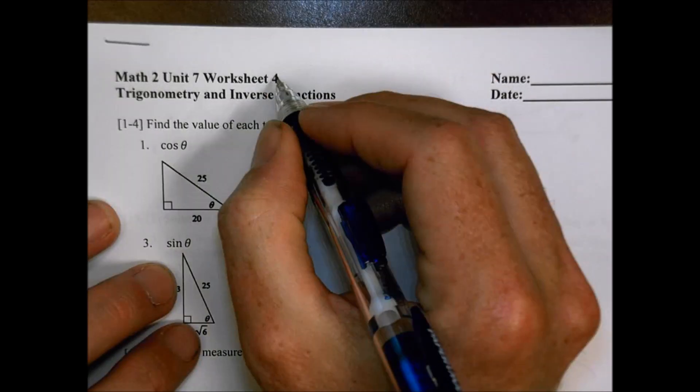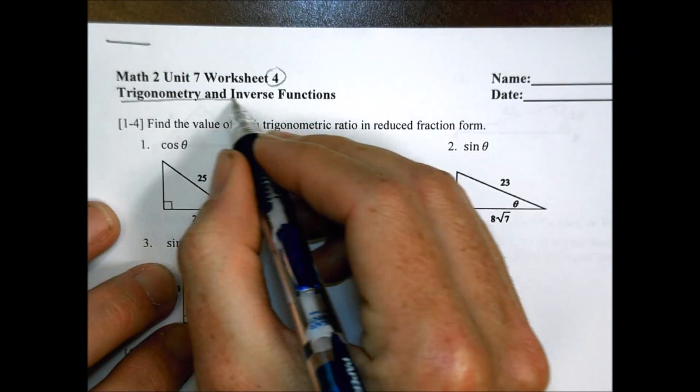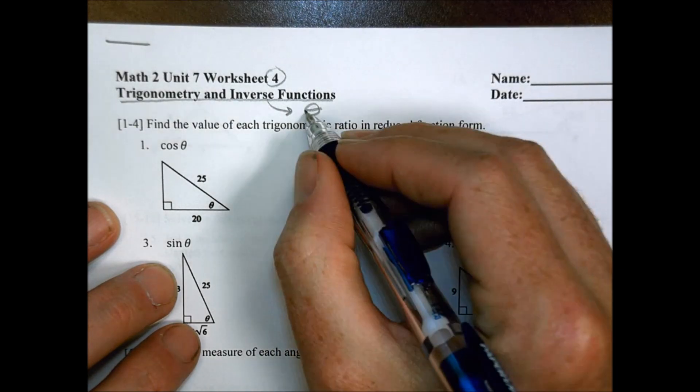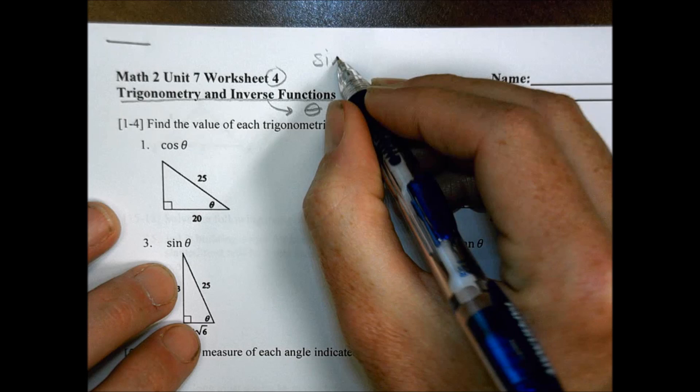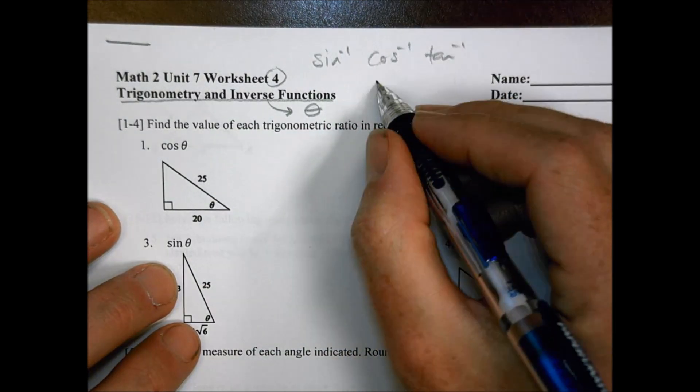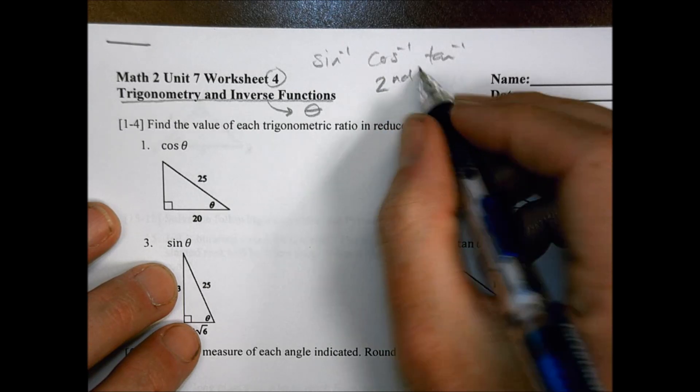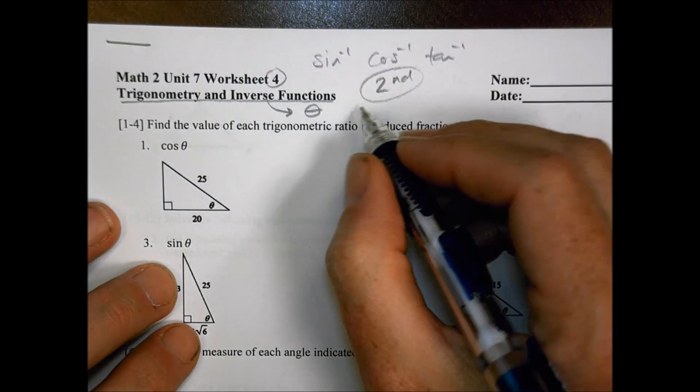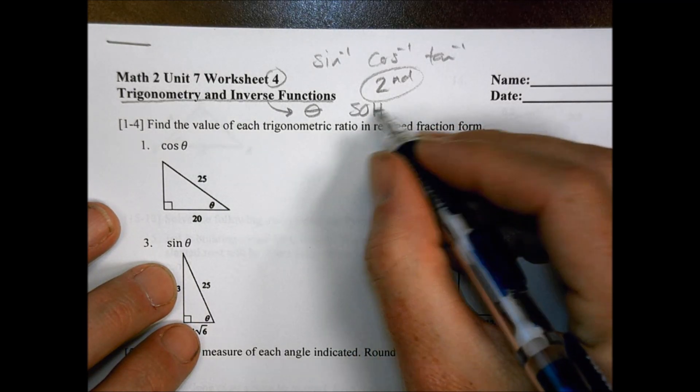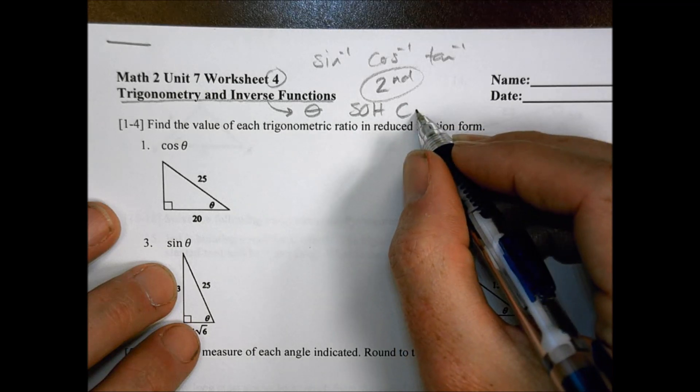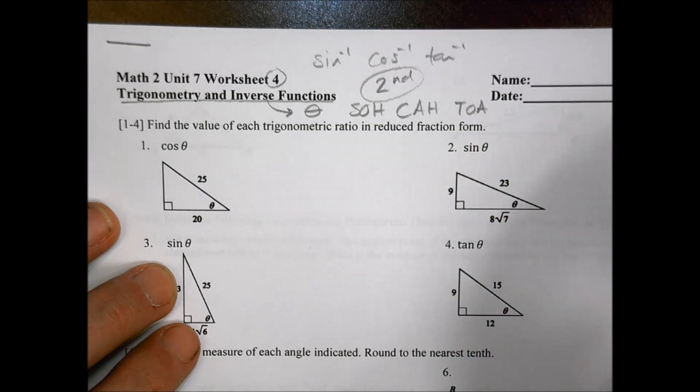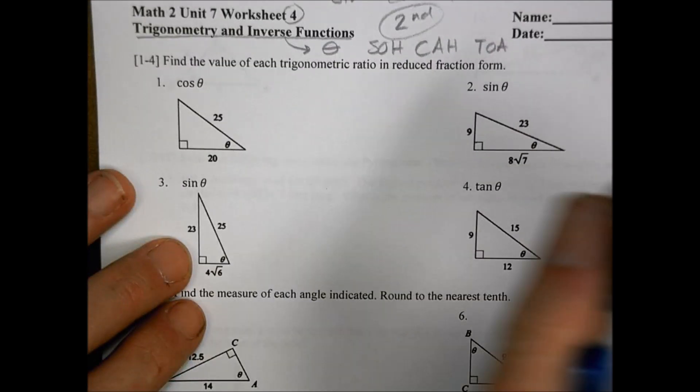Hey there, this is Math 2, unit 7, worksheet number 4, looking at trigonometry and inverse functions. The inverse function means we're going to be looking for the angle measurements today using perhaps what you might call the sine to the negative 1 or cosine negative 1, tangent negative 1. On your calculator, that's going to be using the second function. Just recall that for our trig ratios, we have sine equals opposite over hypotenuse, cosine equals adjacent over hypotenuse, and tangent equals opposite over adjacent.